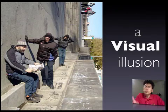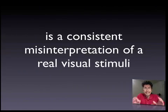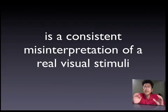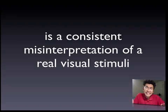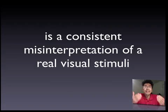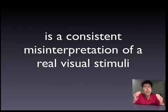A visual illusion is a consistent misinterpretation of a real visual stimulus, or another way of saying it is when perception consistently differs from objective reality.